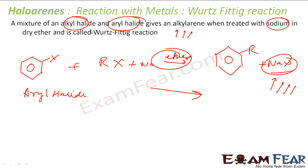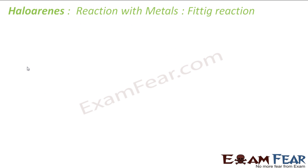A similar reaction, but instead of using an alkyl halide we use only aryl halide — two aryl halides treated with sodium. This variant is called the Fittig reaction. So if you use only aryl halide and treat with sodium, you get a biaryl product.